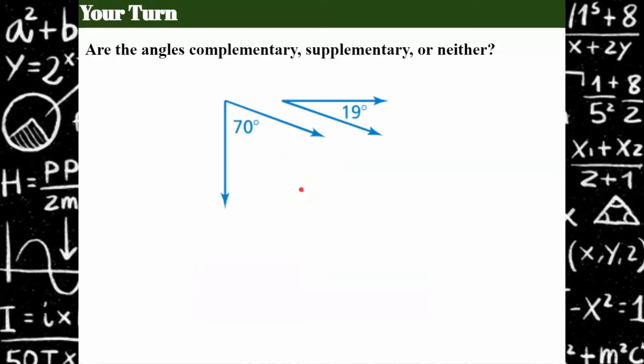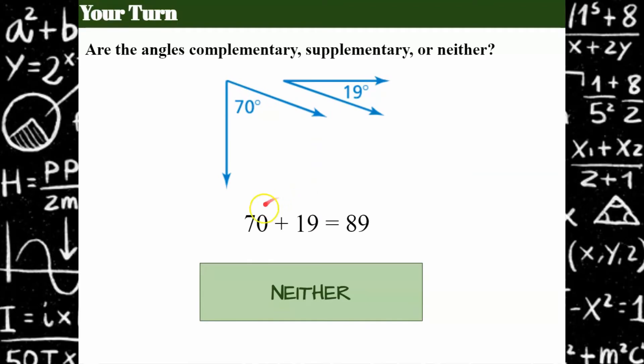Try this one. So we add them together. 70 plus 19 is 89. So therefore, they're not equal to 90 or 180. It is neither.